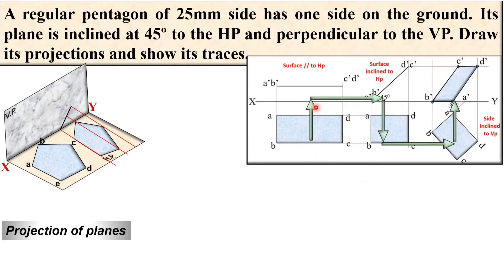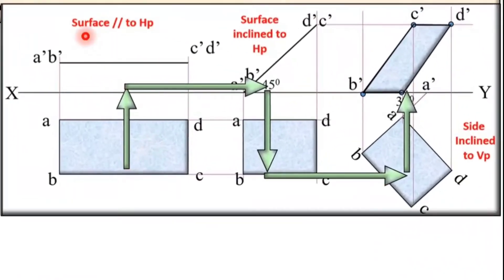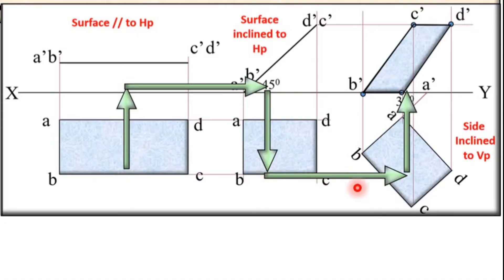Since we have assumed the plane is parallel to HP, first you draw the top view and then you can draw the front view. Then you replace it — draw the vertical projection and horizontal projection — so that you will get this result. If a third stage is required, once again you replace it and draw the projection to get the solution.